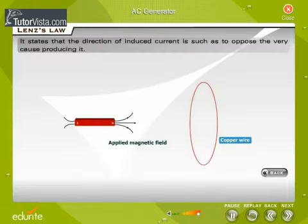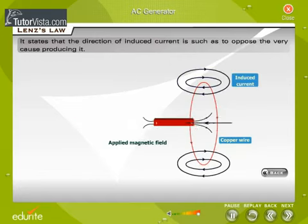Lenz's law states that the direction of induced current is such as to oppose the very cause producing it.